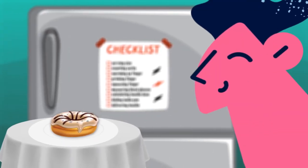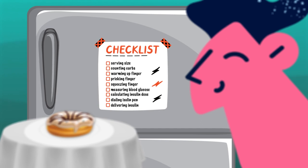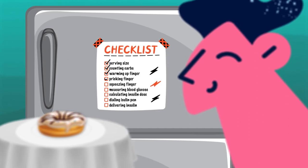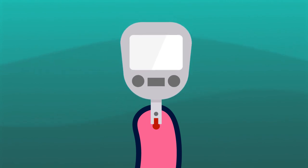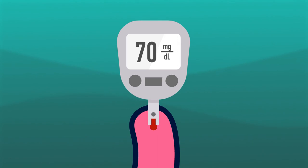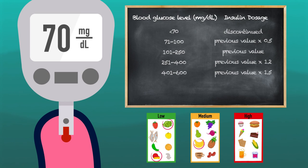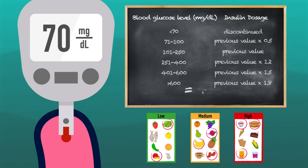Dosing rapid-acting insulin before meals is a laborious process involving multiple steps. First, the current glucose level is measured through the use of a lancing device to obtain blood. Then, the dose of insulin required is calculated, based on the glucose value as well as on the estimated carbohydrate load of the meal. Performing these steps can be challenging and time-consuming, which contributes to poor adherence.